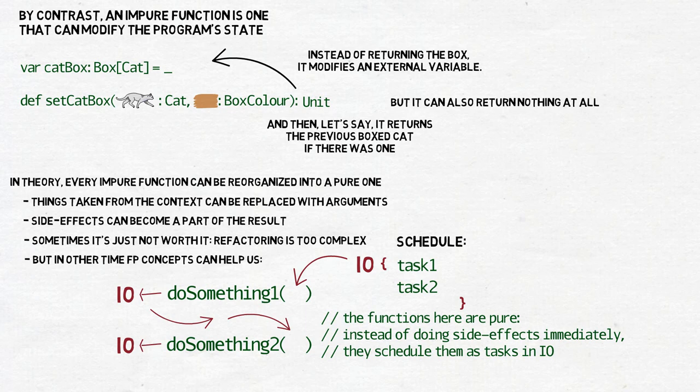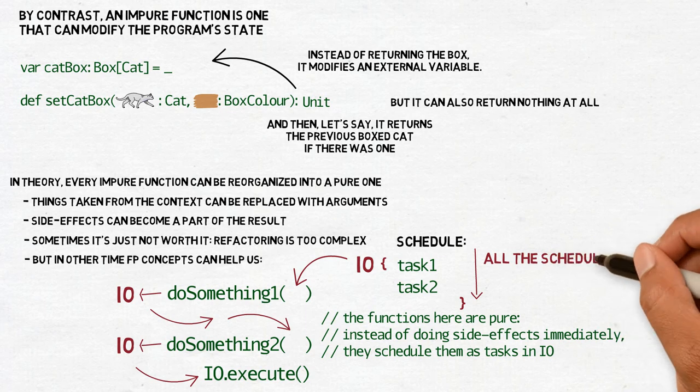Then, at some point, the program decides that it can wait no longer and executes all the records in the order they were accumulated. This gives us better control over what changes are done when.